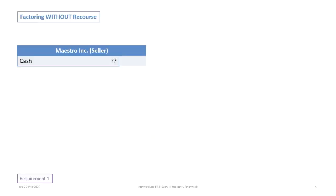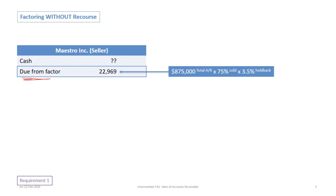We begin by accounting on the seller side. We're going to have a debit to cash because Maestro will receive cash from the factor, but we don't know exactly how much yet, so it's easiest to leave it until the end. We know there will be an amount due from the factor related to the holdback. The factor assesses a holdback of 3.5% of the amount sold to protect itself. If all receivables are recoverable, the holdback will be paid to Maestro. We calculate that holdback as $875,000 total accounts receivable times 75% sold times 3.5%, which results in $22,969.